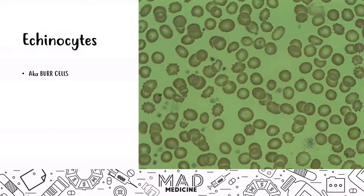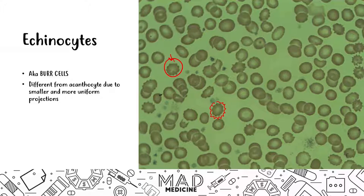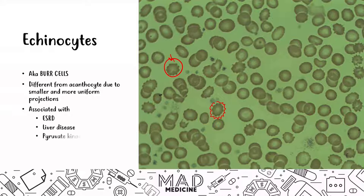Echinocytes are known as burr cells, and they are different from acanthocytes. Echinocytes are smaller than acanthocytes, and their projections are more uniform — they all look similar to each other, whereas acanthocytes don't look similar to each other. Echinocytes are associated with end-stage renal disease, liver disease, and pyruvate kinase deficiency.